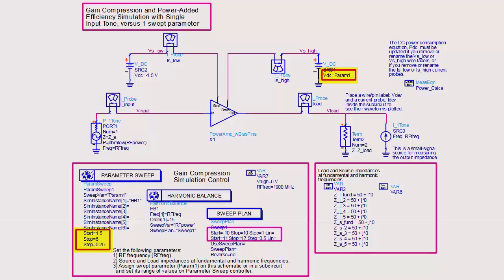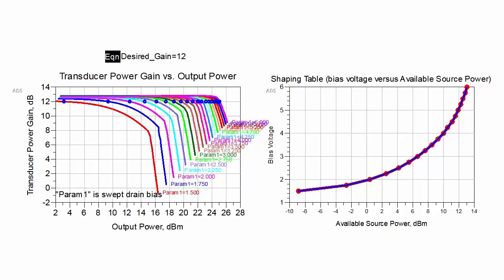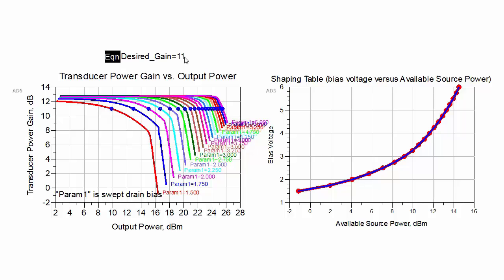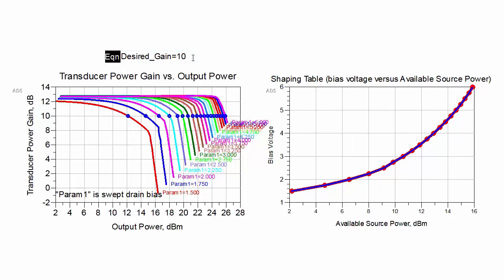This ADS schematic has the simulation setup. The data display allows you to select a particular gain you want to maintain. You enter the desired gain you want. For this amplifier something between 10 and 12 dB would be good. And this automatically creates a shaping table that shows the bias voltage versus available source power.